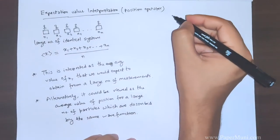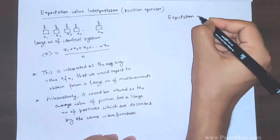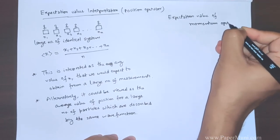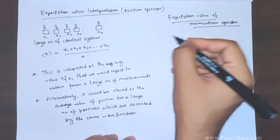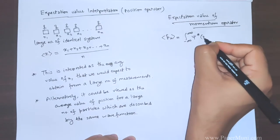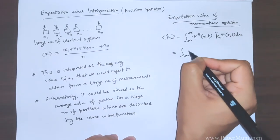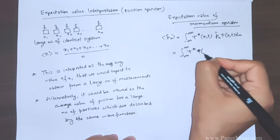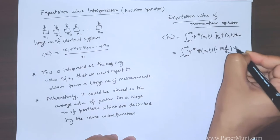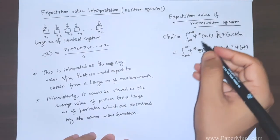Similarly, one can write the expectation value of the momentum operator with respect to a wave function. This is written as angle-bracket p-hat, equal to the integral from minus infinity to plus infinity of psi-star(x,t) times px times psi(x,t) dx. Now replacing the momentum operator px by its form, minus i-h-bar d/dx, we get the expectation value of the momentum operator.